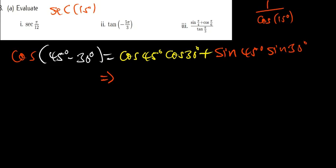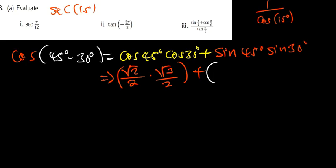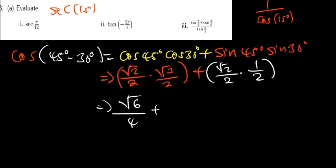Now I'll substitute the special angle values. cos(45°) is √2/2, and cos(30°) is √3/2. So that gives (√2/2)(√3/2). Then plus sin(45°) which is √2/2, times sin(30°) which is 1/2. Simplifying: √2 · √3 = √6, and 2 · 2 = 4, giving √6/4. Plus √2 · 1 = √2, and 2 · 2 = 4, giving √2/4.